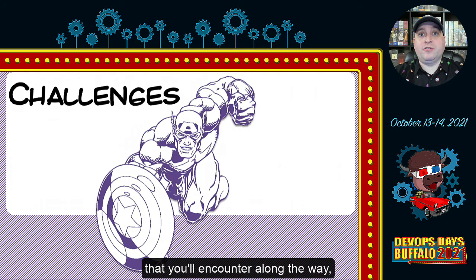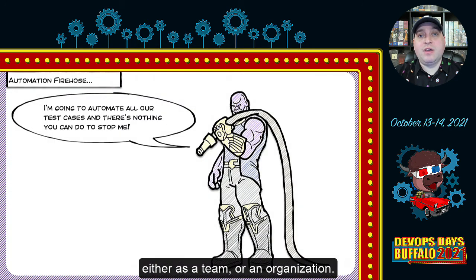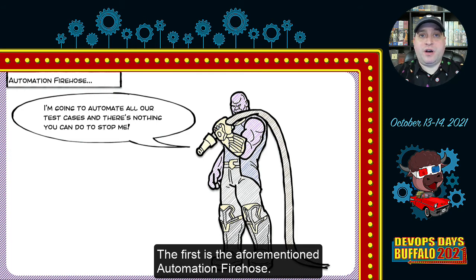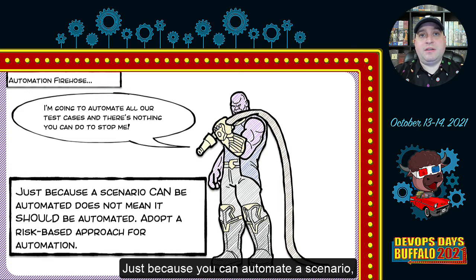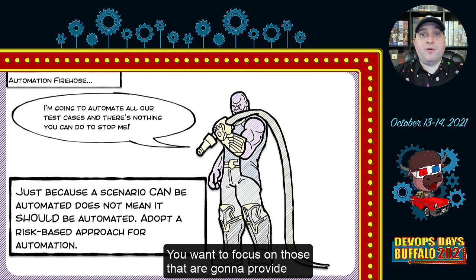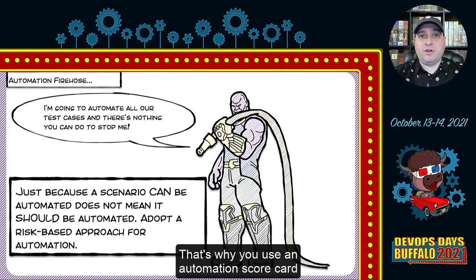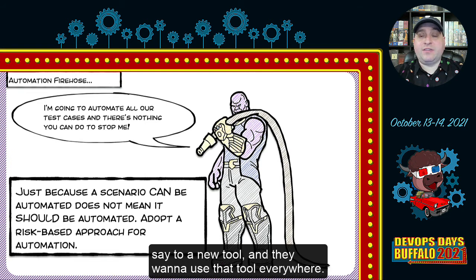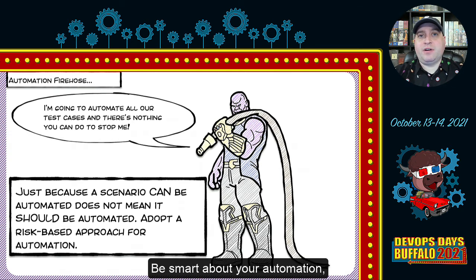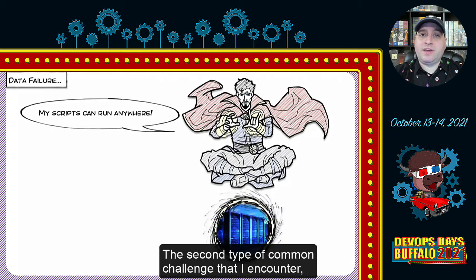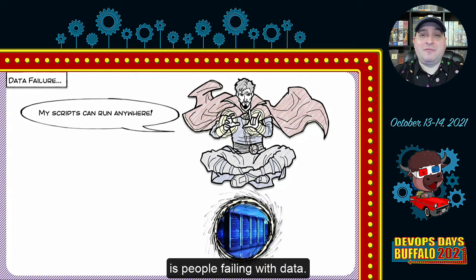There are several challenges you'll encounter along the way. The first is the automation firehose: just because you can automate a scenario doesn't mean you should. You want to focus on those that are going to provide the most value — that's why you use an automation scorecard to help determine priority. People often gain access to a new tool and want to use it everywhere. Don't fall into that trap. Be smart about your automation, particularly your investment in end-to-end UI-based automation.